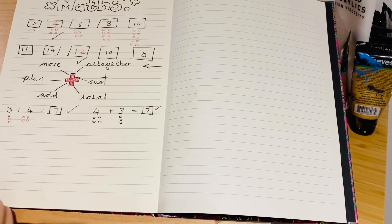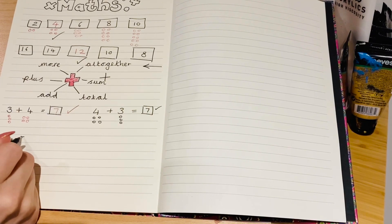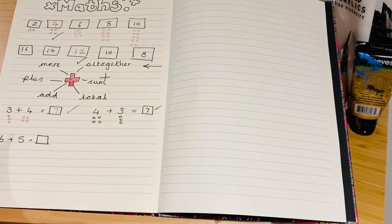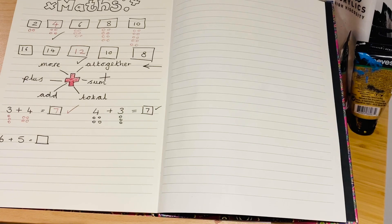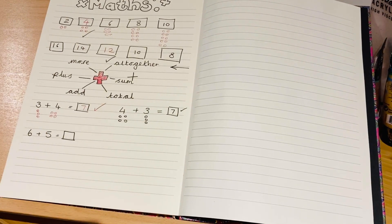This time I'm going to give you slightly larger numbers. Let's go for six, add five equals something. See if you can use this method or any other methods that you know to solve that calculation. Also, please feel free to pause the video at any point. I might be talking a bit quickly. That's fine. Just go at your own pace.